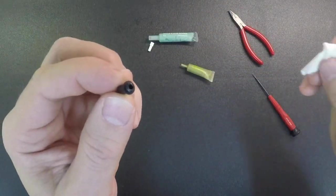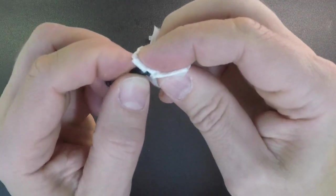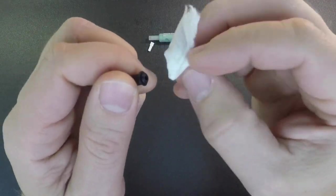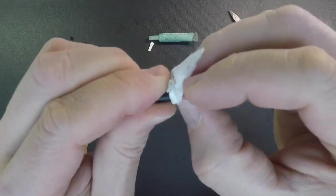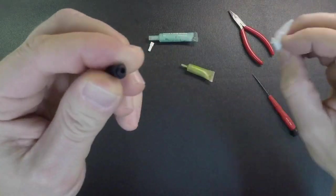After you do that, take a little piece of paper towel or a rag and just wipe off the excess grease around this snap area. If you have grease on that snap area, it'll want to pop the caps off easier. So just wipe that nice and clean.